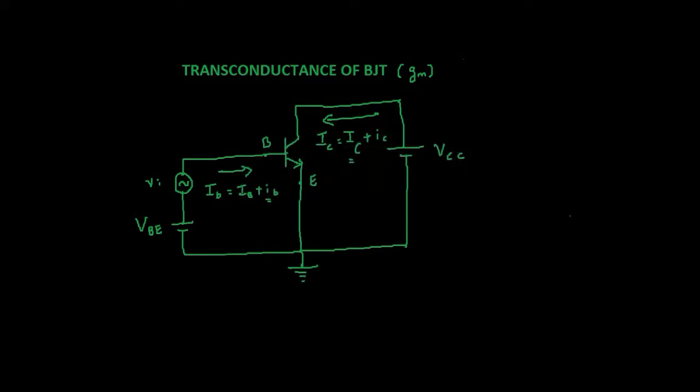Hello all, welcome to the new video on signals and systems. In this video we'll be studying about transconductance of BJT — we'll define what is transconductance of a bipolar junction transistor and also see what is its value. GM is also defined for MOSFETs, which we'll see in the next video. In this video we'll be only concentrating on deriving the value of transconductance of BJT.